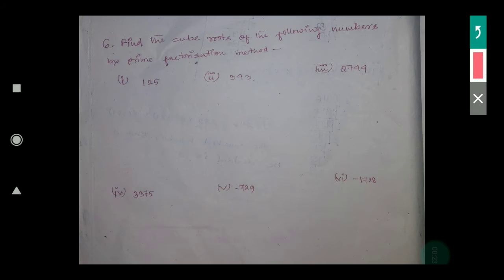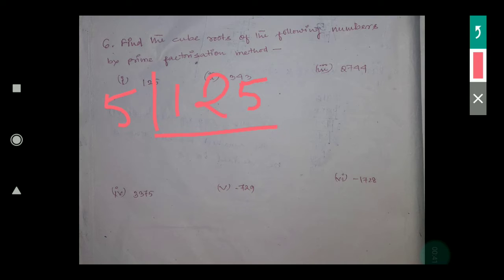The number given is 125. First you find the factors of 125. So: 5 times 5 is 25, then 5 times 25 is 125. So 125 means 5 cubed. Now the question asks for the cube root of 125.